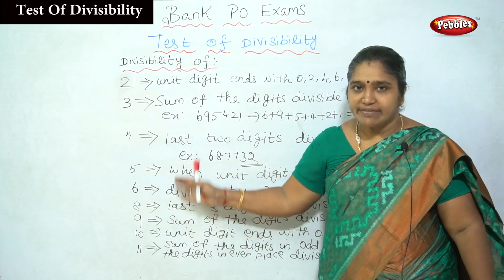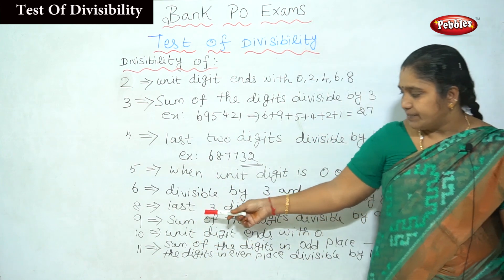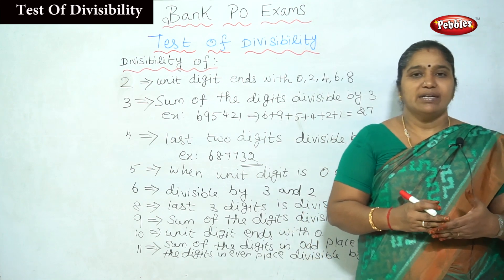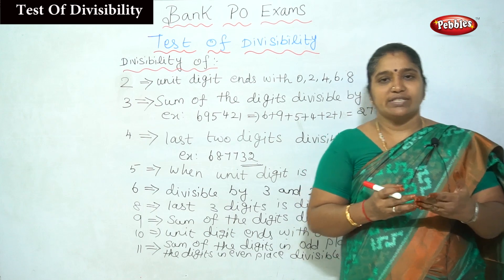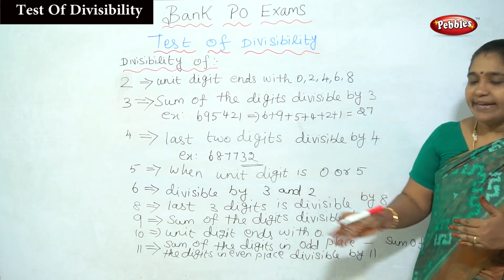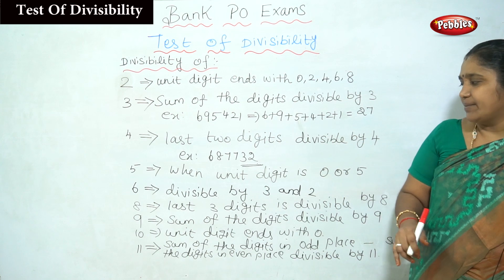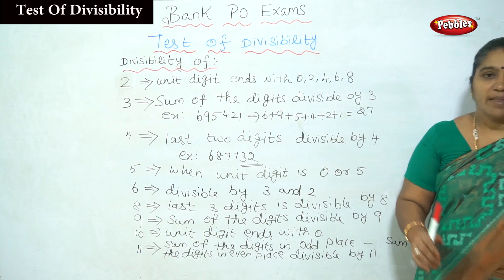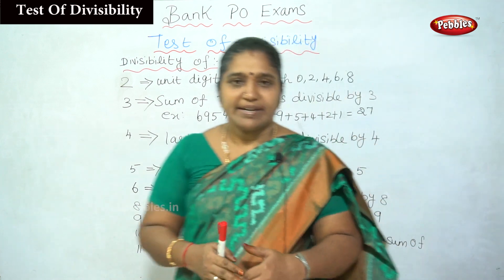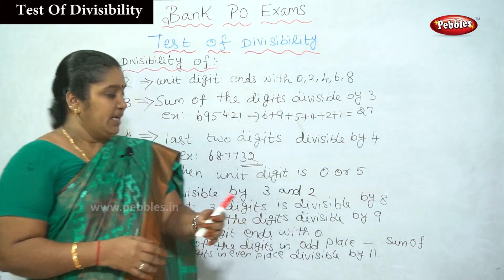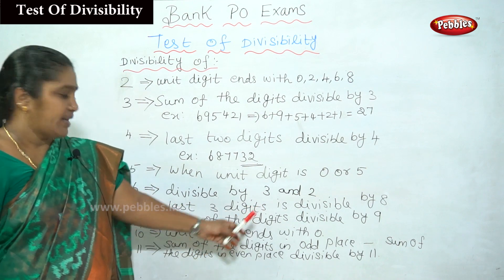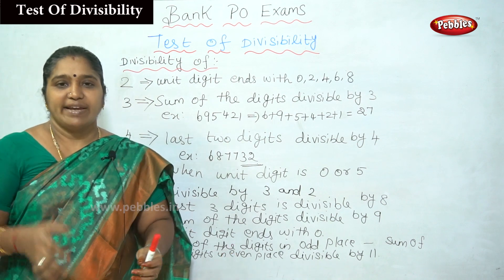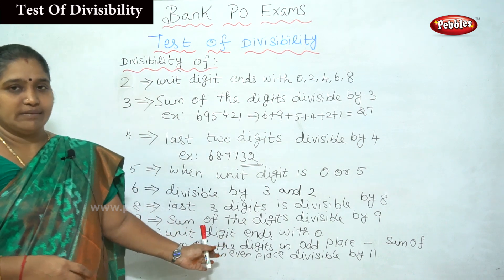For divisibility by 8: the last 3 digits must be divisible by 8. For divisibility by 9: the sum of the digits must be divisible by 9; if so, the number is divisible by 9. For divisibility by 10: if the number ends with 0, it is always divisible by 10.